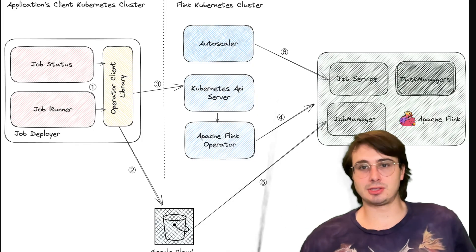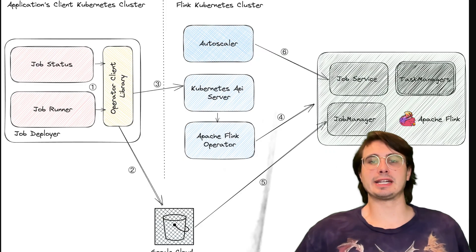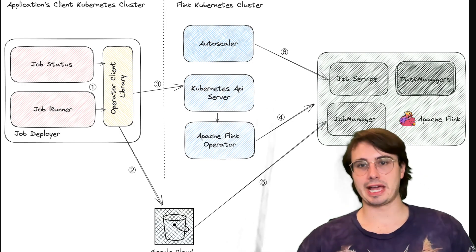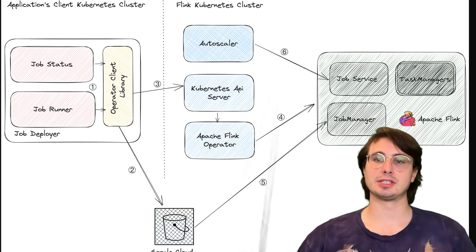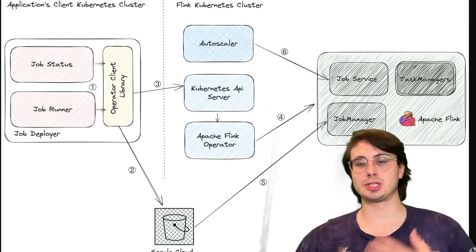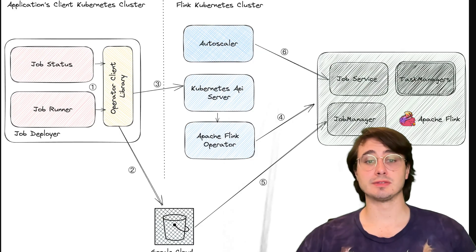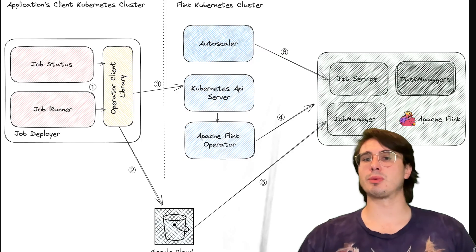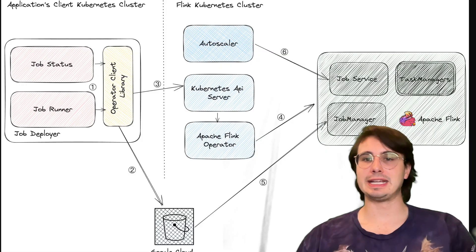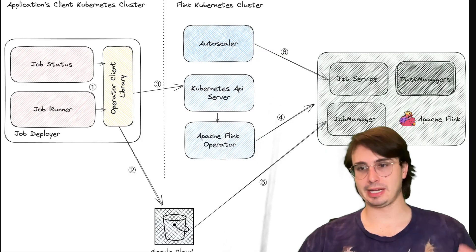High availability will require external coordination systems like Zookeeper, or you can use native Kubernetes mechanisms for failover. The key thing is this HA setup should include proper storage configuration for persistent job metadata and recovery information, so you can continue running without any interruption or data loss. Typically, plan for at least three Zookeeper nodes in different availability zones to ensure quorum during any partial failure.